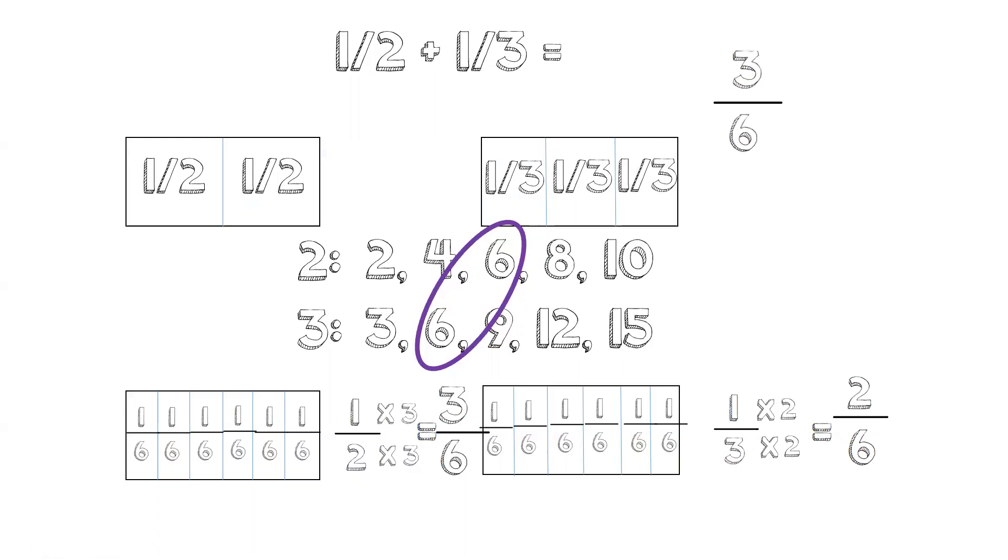So now we have three-sixths plus two-sixths equals. And notice that there's six here and a six here. So now we know that the bottom is going to say a six. We just have to add the top. Three plus two, and that is five. So the answer is five-sixths.